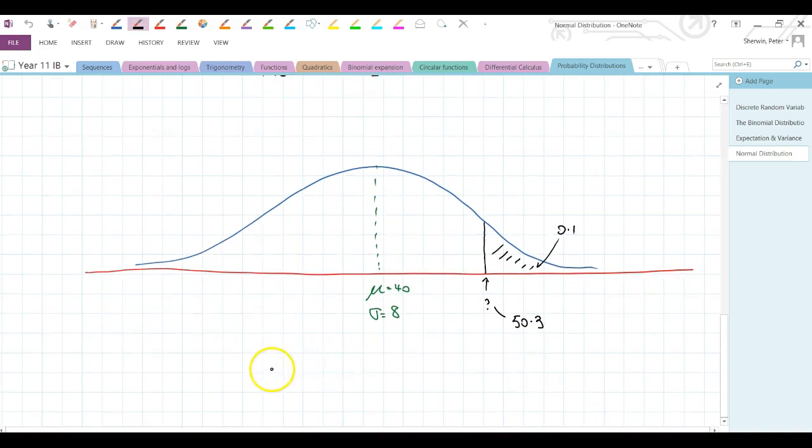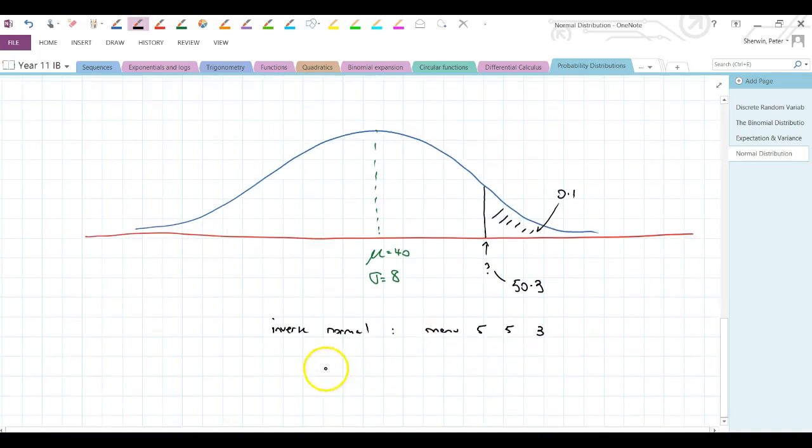Inverse normal, which is menu 5, 5, and then it was 3 to get to inverse normal. And the note that we need to make is that area equals left area. Area to the left. So the area I put in has to be that area there. Not the area to the right, but area to the left.